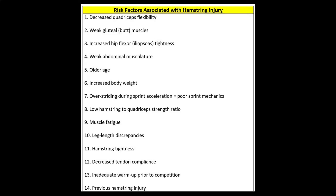There are many reasons why hamstring strains may occur. Risk factors associated with hamstring injury include decreased quadriceps flexibility, weak gluteal muscles, increased hip flexor tightness, weak abdominal musculature, older age, increased body weight, over striding during sprint acceleration, a low hamstring to quadriceps strength ratio, muscle fatigue, leg length discrepancies, hamstring tightness (though it is unclear whether this is a cause or consequence of injury), decreased tendon compliance, inadequate warm-up prior to competition, and previous injury — which is consistently one of the highest predictors of future injury risk.